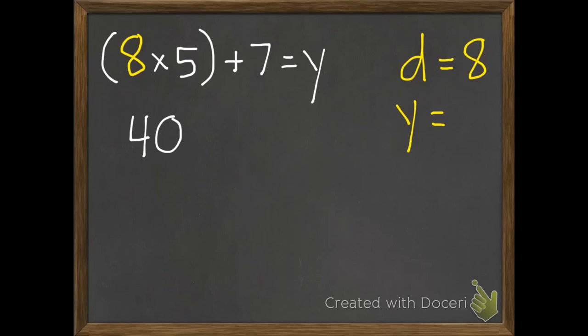Then, if we had multiplication or division, we would do that next, and then addition and subtraction. So we have plus 7 that we need to add on equals our y. So what is 40 plus 7? 47. So 47 equals y.